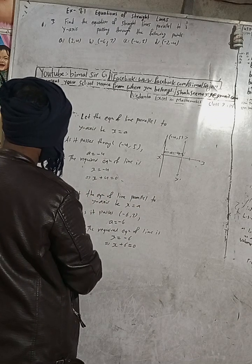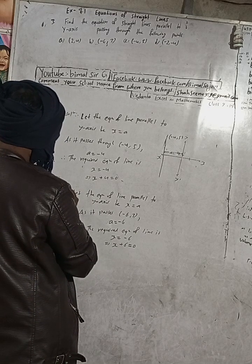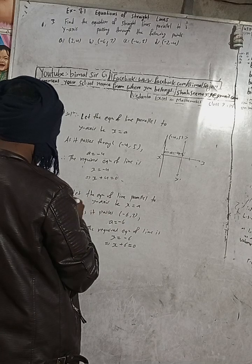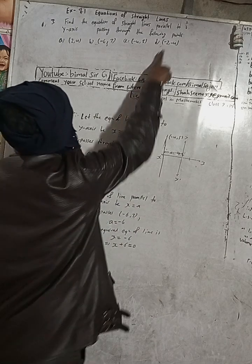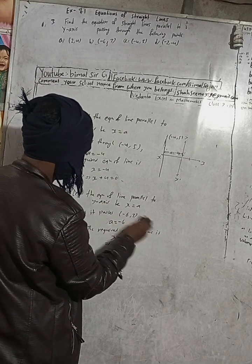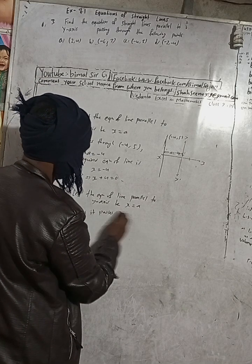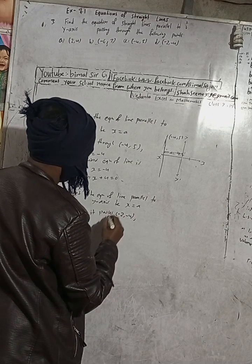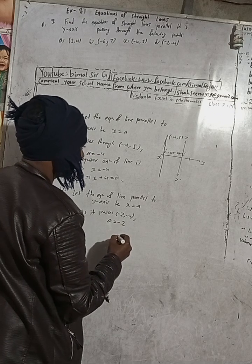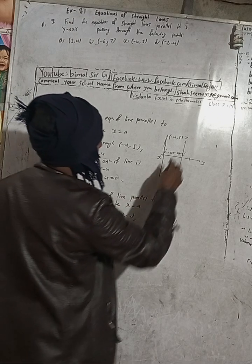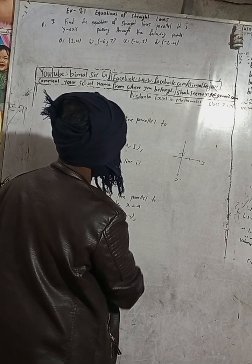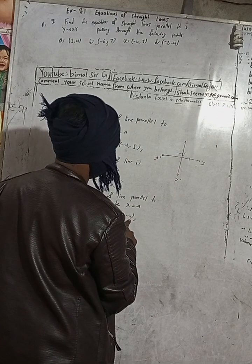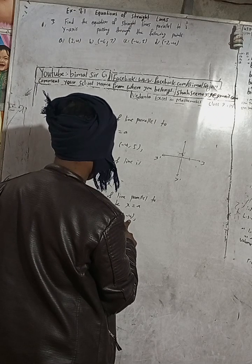Now for part (d): let the equation of the line parallel to the y-axis be x = a. The point is (-2, -4). As it passes through (-2, -4), the a-value is -2. Both coordinates are negative, meaning the point lies in the third quadrant.